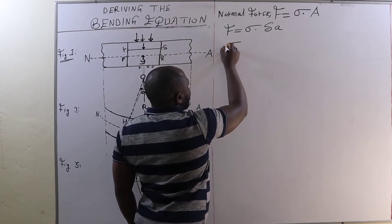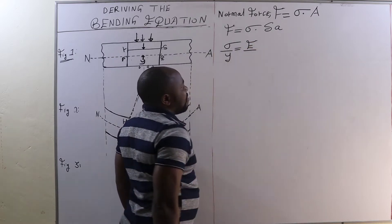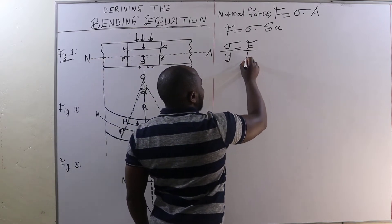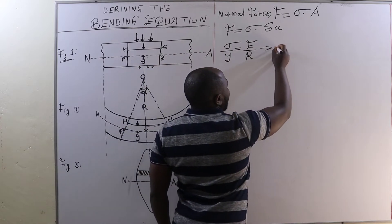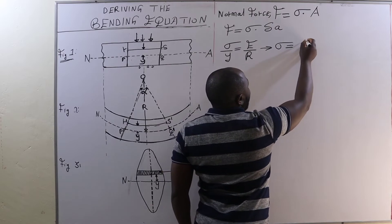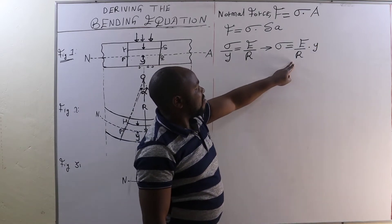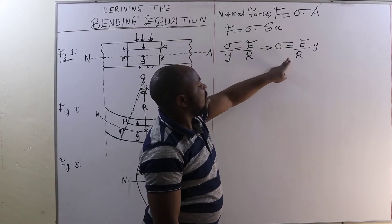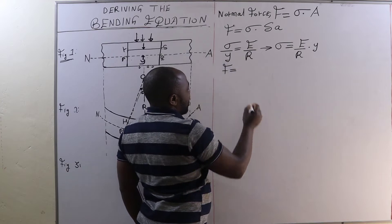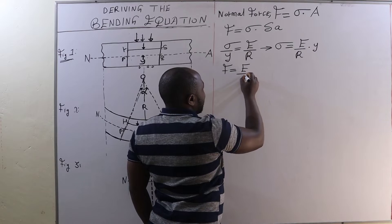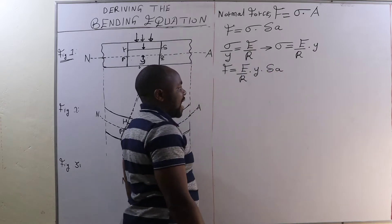Now, from the relation: stress over Y is equal to Young's modulus of elasticity divided by the radius. When we make stress the subject of this equation, we get stress equals Young's modulus of elasticity divided by the radius, multiplied by Y. Therefore, substituting this stress, the normal force on the area of the elemental strip is E over R, multiplied by Y, times the area of the elemental strip.